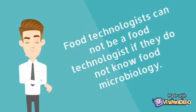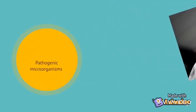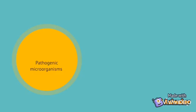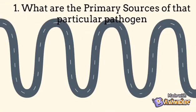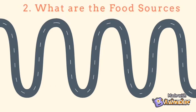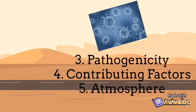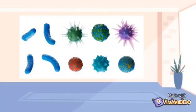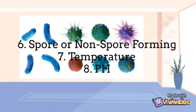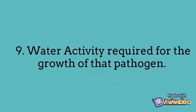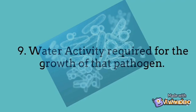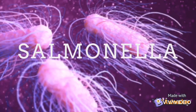Food technologists cannot be a food technologist if they do not know food microbiology. In this series of videos, we will understand in detail about pathogenic microorganisms and cover the following aspects for each food pathogen: what are the primary sources, food sources, pathogenicity, contributing factors, atmosphere, spore or non-spore forming, temperature, pH, and water activity required for growth. In this part, we are going to cover the first pathogen: Salmonella.